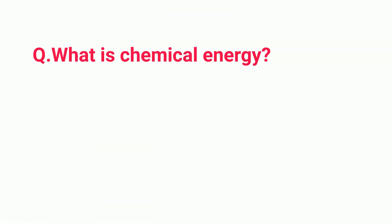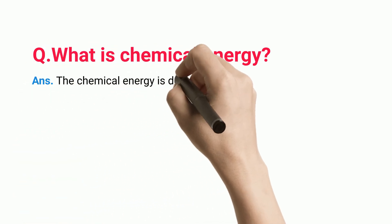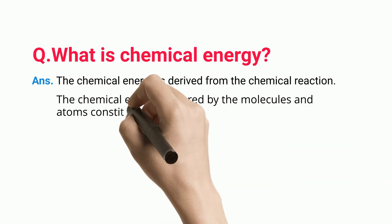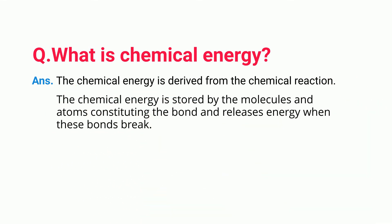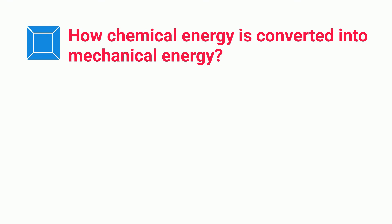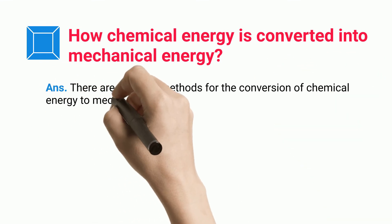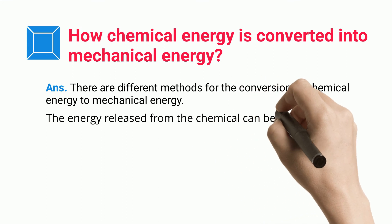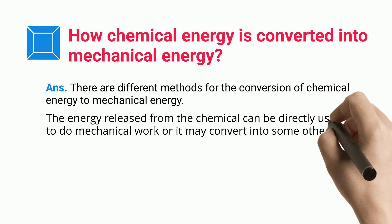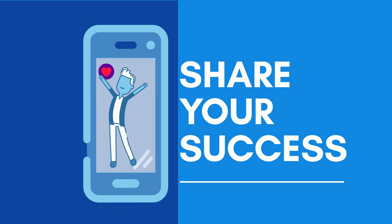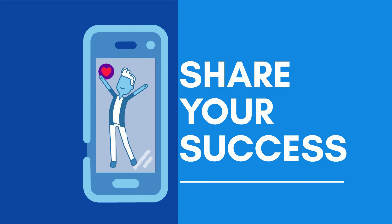What is chemical energy? Chemical energy is derived from chemical reactions. It is stored by molecules and atoms constituting bonds, and releases energy when these bonds break. How is chemical energy converted into mechanical energy? There are different methods for this conversion. The energy released from a chemical reaction can be directly used to do mechanical work, or it may convert into some other form of energy which is then used to derive mechanical energy.